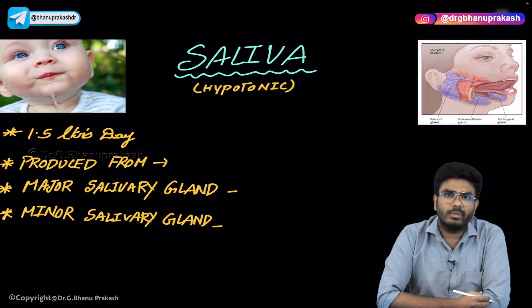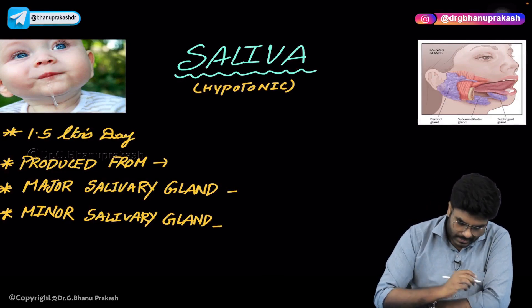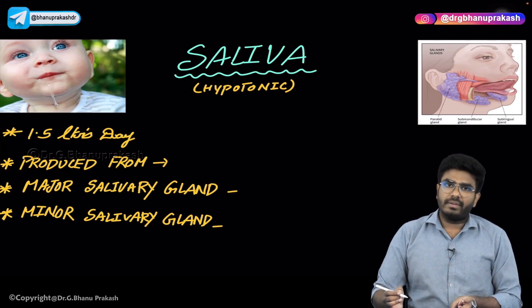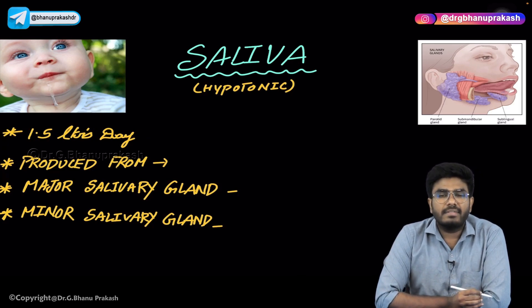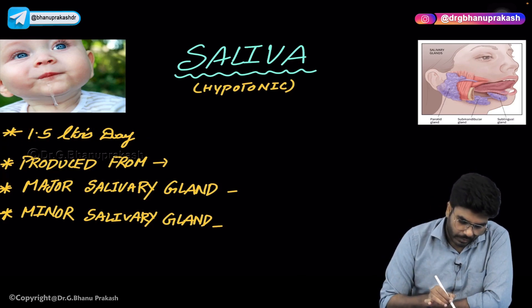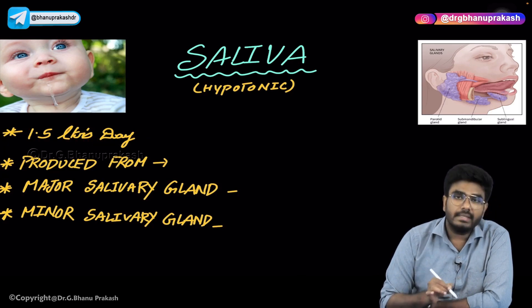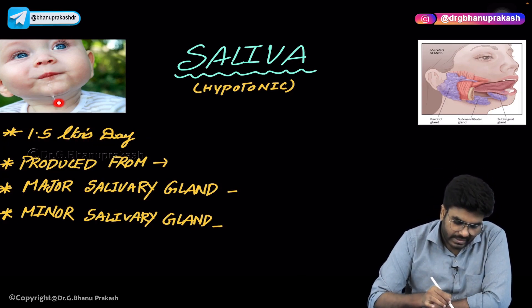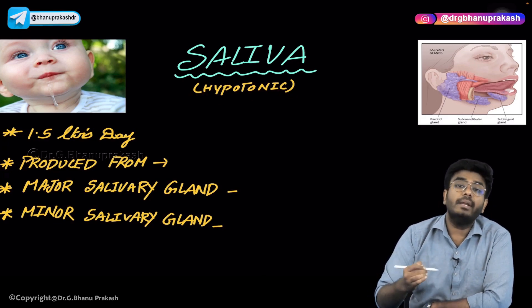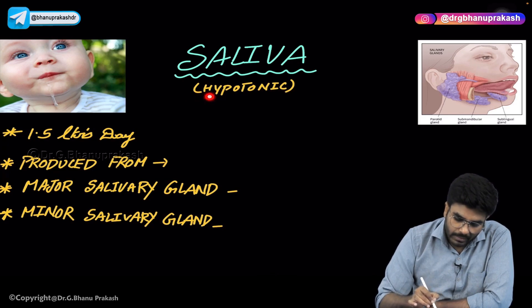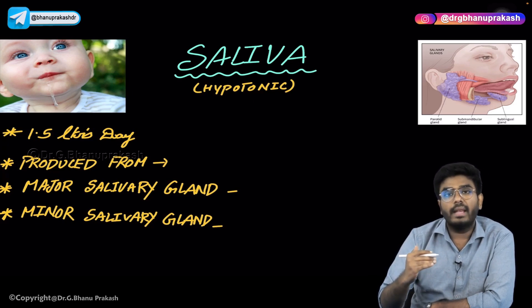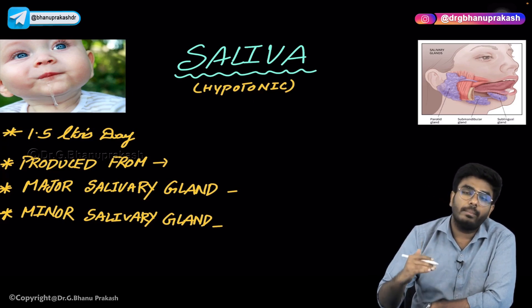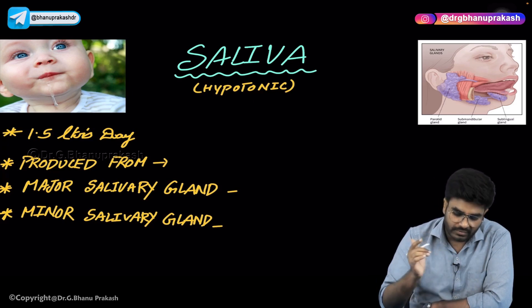Welcome back. In this video, let's discuss saliva and salivary glands. The amount of salivary secretion that happens every day is usually 1.5 liters of saliva produced per day. These salivary secretions are hypotonic in nature — meaning when compared to blood plasma, saliva has a lower osmolarity than blood plasma.